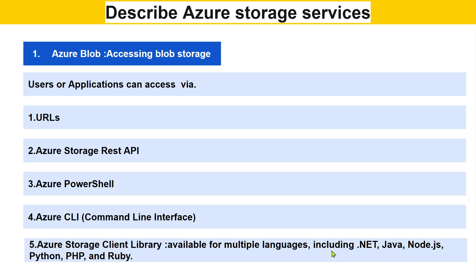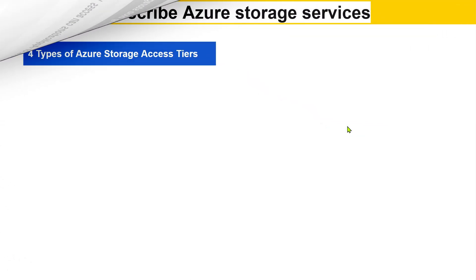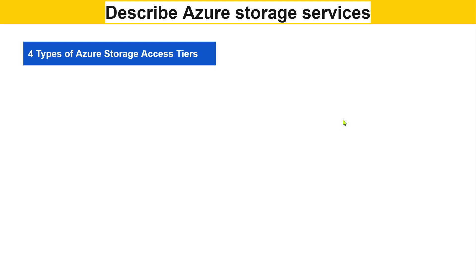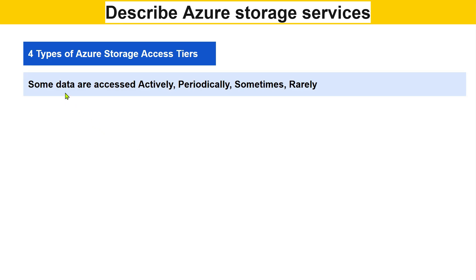When you have stored data, you don't access all of it every day — similar to your computer where you may have gigabytes of data but only access certain files. In Azure, this concept is called Azure Storage Access Tiers, where you access data based on your need.